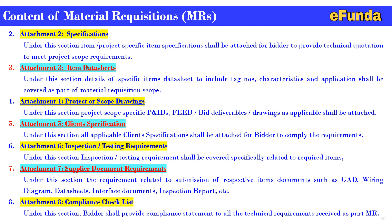Attachment 8 is the compliance checklist. Under this section, the bidder shall provide a compliance statement to all the technical and particular requirements of the authorized material requisition, so that all sections are maintained technically correct and all requirements are listed. This ensures one will not miss the actual or minimum requirements of any item while purchasing or as part of the procurement engineering cycle.